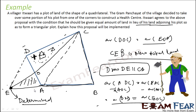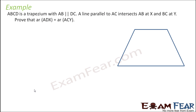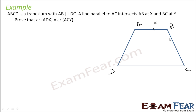This is a good application of the concepts we have studied. Next problem: ABCD is a trapezium with AB parallel to DC. A line parallel to AC intersects AB at X and DC at Y. We require this line parallel to AC, and you can see that these two lines are parallel.